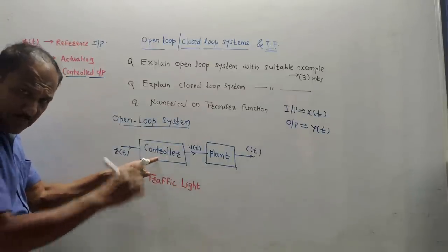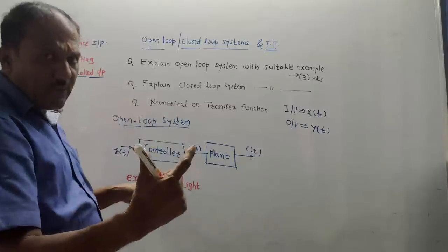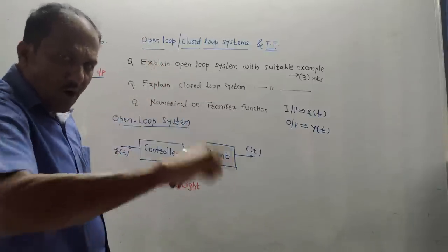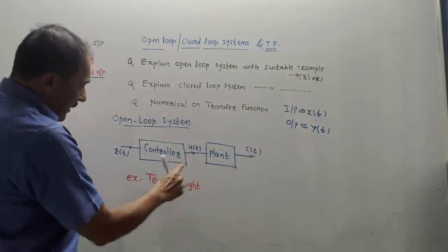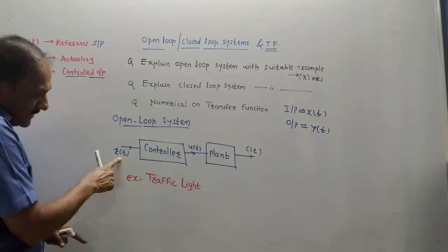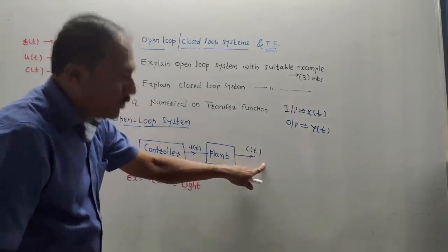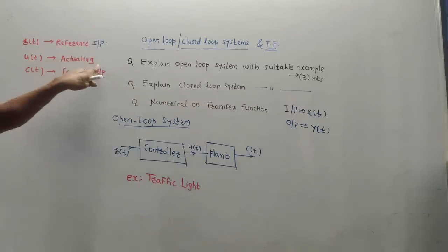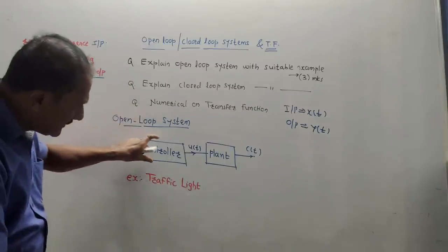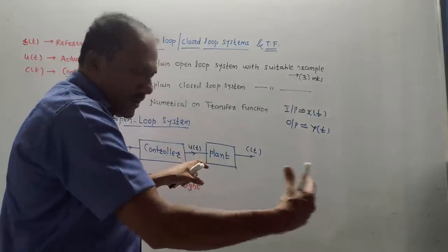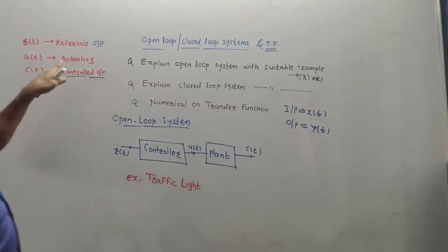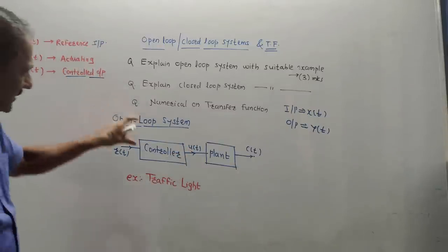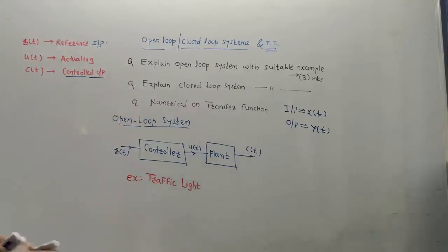The controller is the part which decides the time period for which a particular colored light should be on or off, and the plant is the actual display which we see on the road. r of t is the reference input, c of t is the controlled output, and u of t is known as the actuating signal — the signal the controller gives to the display. This is the open loop transfer function, whose good example is a traffic light controller.